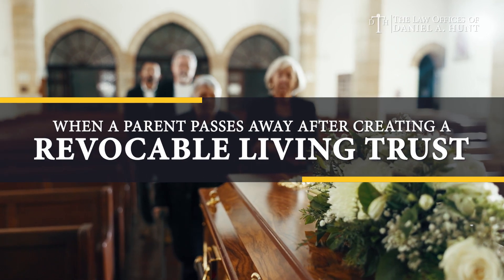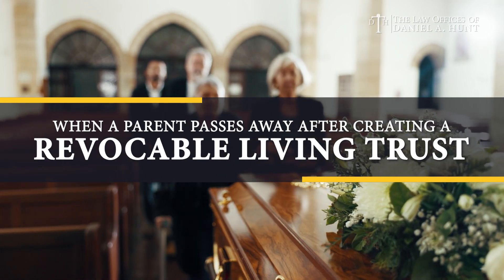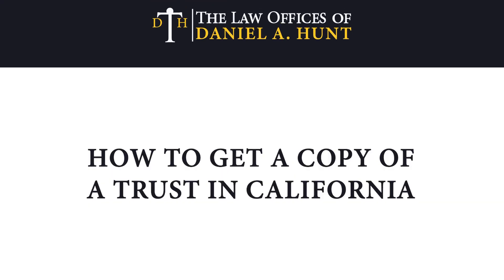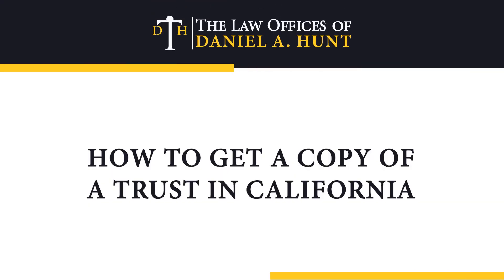When a parent passes away after creating a revocable living trust, their children may wonder how to obtain a copy of the trust documents. This is even more common if the trustee is not communicating with the beneficiaries about the trust administration. I'm Daniel Hunt, a certified specialist in estate planning, trust, and probate law. In this video, I'll share a step-by-step guide on how to get a copy of a trust in California.